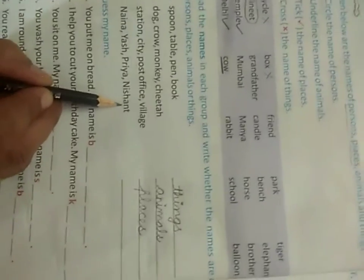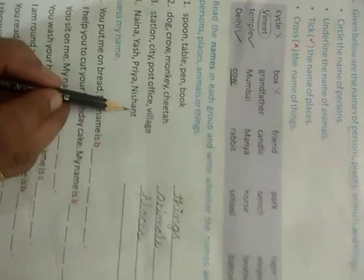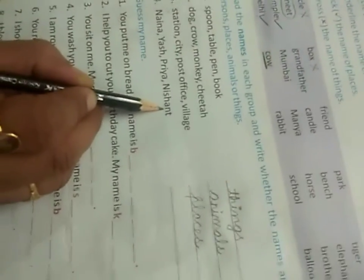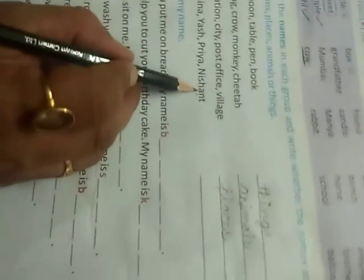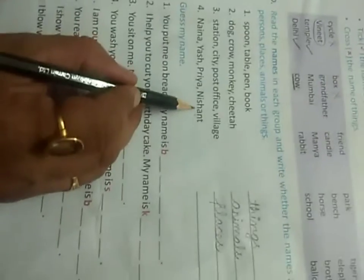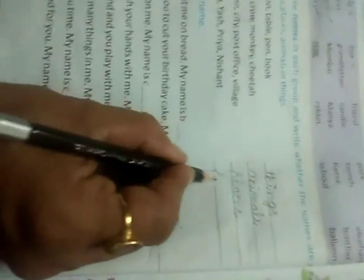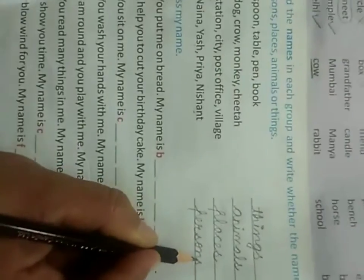Fourth: Naina, Yash, Priya, Nishan. These are the names of persons — or names of people, we also say that. Naina, Yash, Priya, Nishan — these are the names of persons. We will write here: persons.